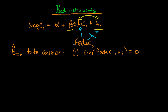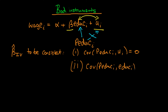That means parental education shouldn't affect an individual's level of wages through any channel except through the children's level of education. That was the first condition. The second condition is that the covariance of parental education with their children's education must be non-zero.